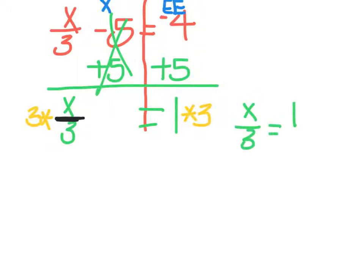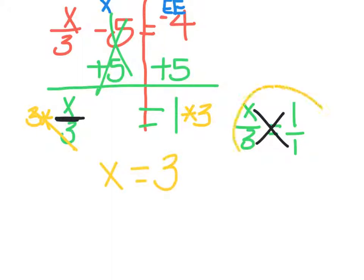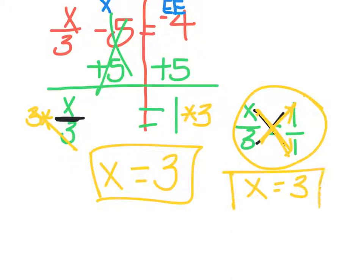I realize you might hate fractions, but if one side is a fraction, it's actually easiest to make the other side a fraction too — then all you have to do is cross multiply. Either way, what's going to happen is I'll end up with x equals 1 times 3, which is 3. Looking at this step: when I cross multiply, x times 1 is x, and 3 times 1 is 3. So no matter what, I get x equals 3.